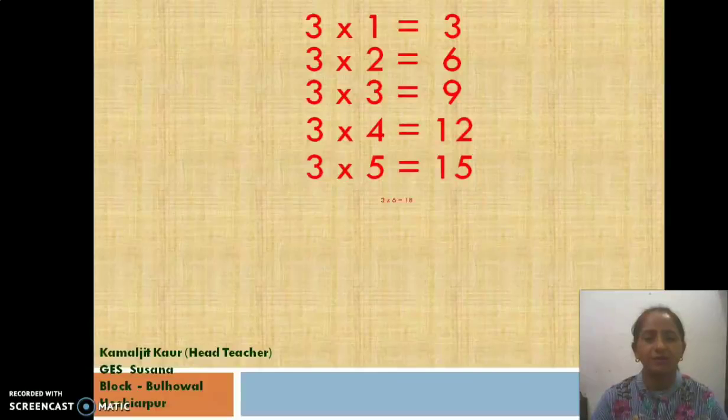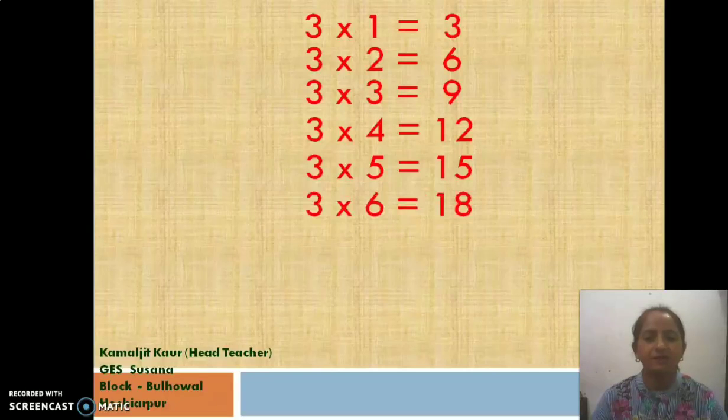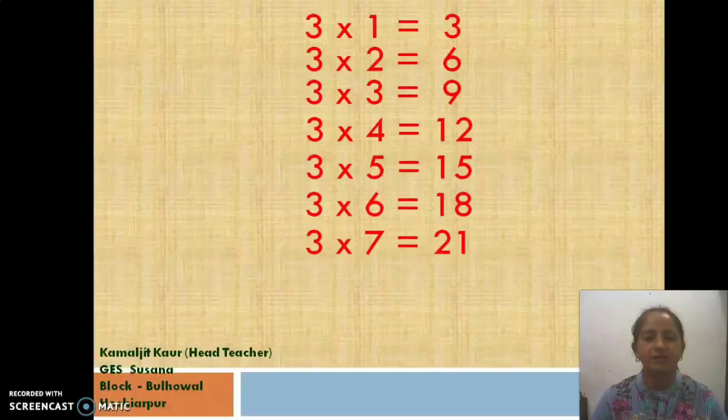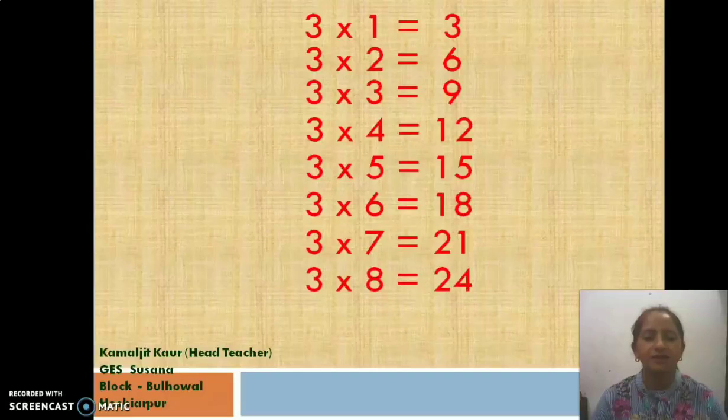Three times five is fifteen. Three times six is eighteen. Three times seven is twenty-one. Three times eight is twenty-four.